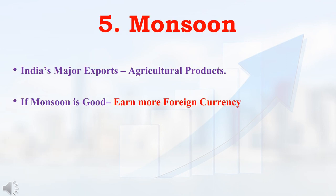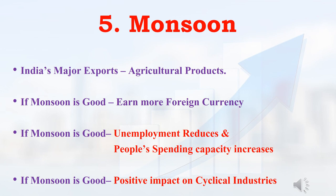In economy analysis, the last parameter is Indian monsoon. If Indian monsoon is good, it will have a good impact on the share market, because India is basically an agricultural country and agricultural-based products are what we export more to other countries. If Indian monsoon is good, then our exports will be more than our imports, and because of that India will earn more and more foreign currency. If monsoon is good, then income from agriculture will rise, so unemployment will reduce. Because of this, people's spending capacity will rise — people will purchase many luxury items, so finally cyclical industries will have a good impact.